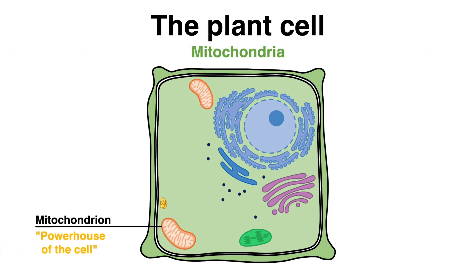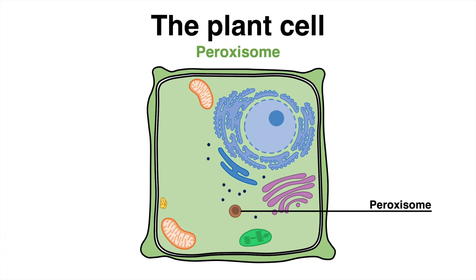Mitochondria are the powerhouse of the cell — these organelles provide the energy needed to power the cell's biochemical reactions. Peroxisomes are organelles that can accumulate and degrade peroxides that can be dangerous to other cell compartments. Hydrogen peroxide, for instance, is an unavoidable by-product of biochemical reactions.